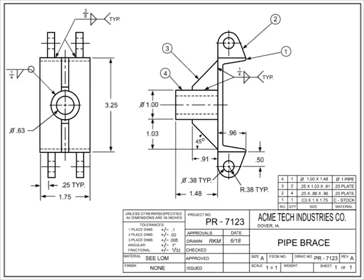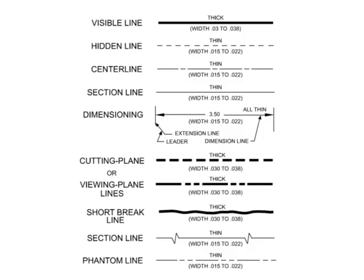Engineering drawings and blueprints are a type of graphical language that communicates ideas and information from the engineer who designed a part to the workers who will make it. The graphical images in the field of the drawing are generated using a variety of line styles.